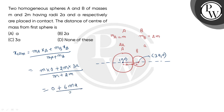That gives us 6MA divided by 3M, which simplifies to 2A. So the center of mass is at coordinate 2A. The distance of the center of mass from the first sphere is 2A. So the correct answer is option B.